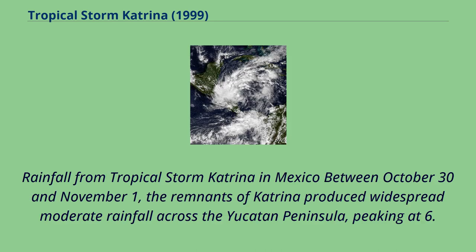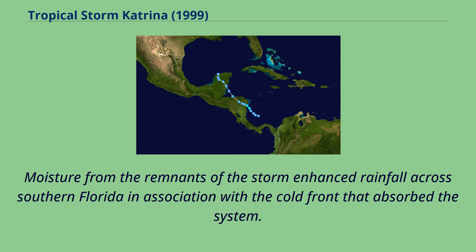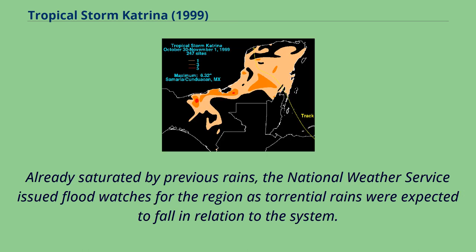Rainfall from Tropical Storm Katrina in Mexico: between October 30 and November 1, the remnants of Katrina produced widespread moderate rainfall across the Yucatan Peninsula, peaking at 6.32 inches in Cunduacan. Moisture from the remnants of the storm enhanced rainfall across southern Florida in association with the cold front that absorbed the system. Already saturated by previous rains, the National Weather Service issued flood watches for the region as torrential rains were expected.